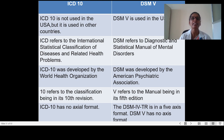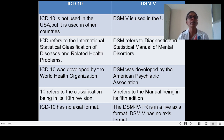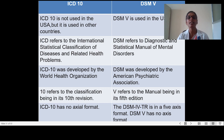The differences between ICD-10 and DSM-5: ICD-10 is not used in the USA but is used in other countries, whereas DSM is used in the United States of America. ICD-10 refers to the International Classification of Diseases and Related Health Problems, developed by the World Health Organization, while DSM refers to the Diagnostic and Statistical Manual of Mental Disorders, developed by the American Psychiatric Association. ICD-10 refers to classification in its 10th revision, whereas DSM-5 refers to the manual being in its fifth edition. ICD-10 has no axial format (F00–F99), whereas DSM-4 TR uses a 5-axis format and DSM-5 has no axis format at all.